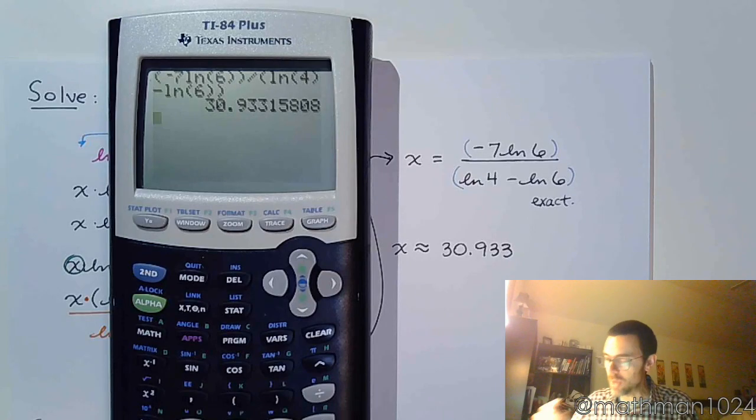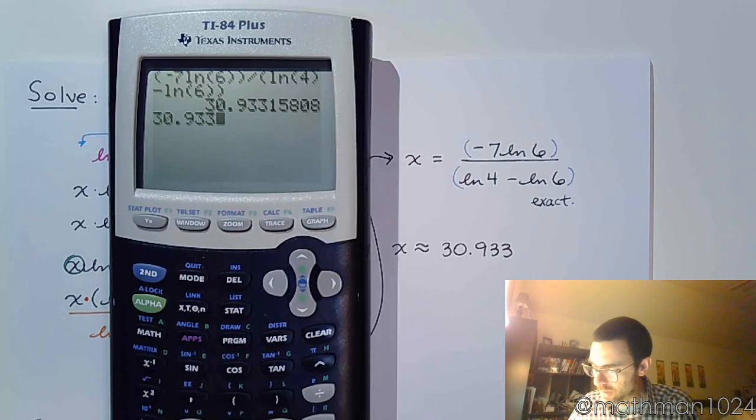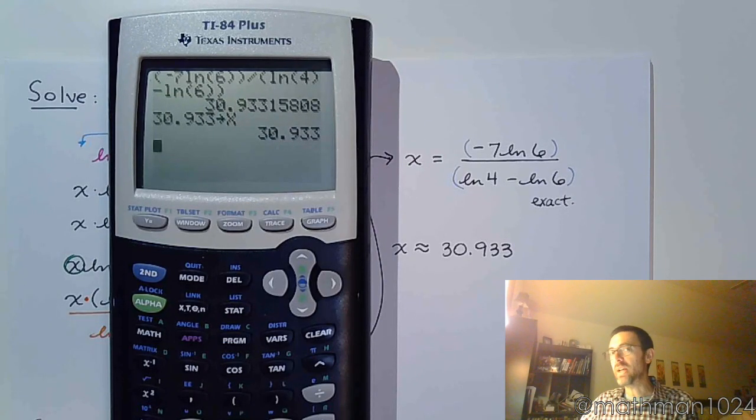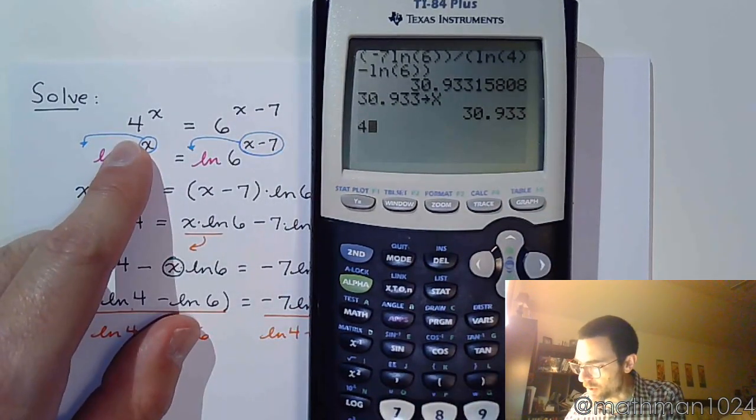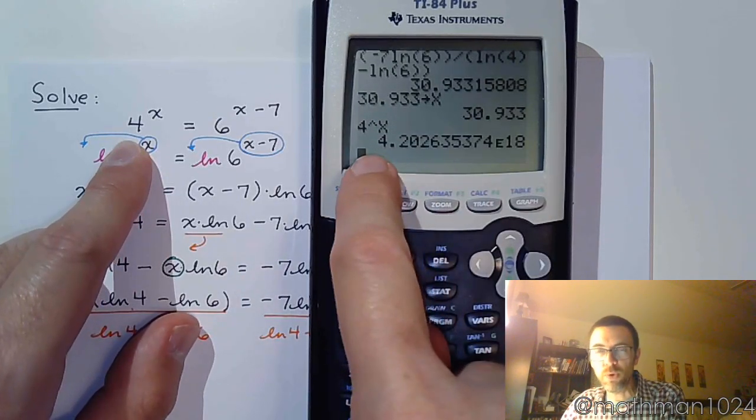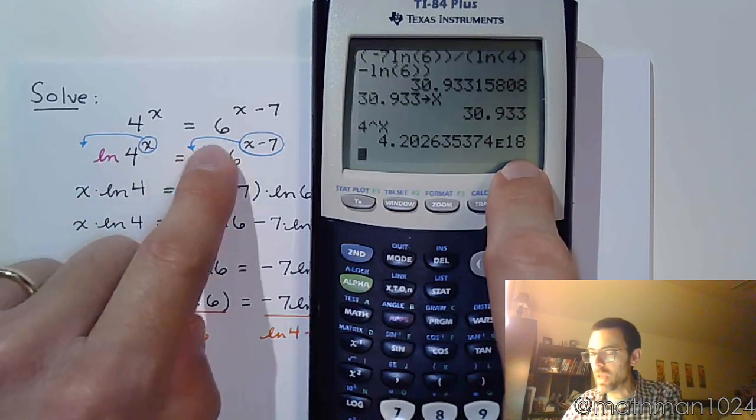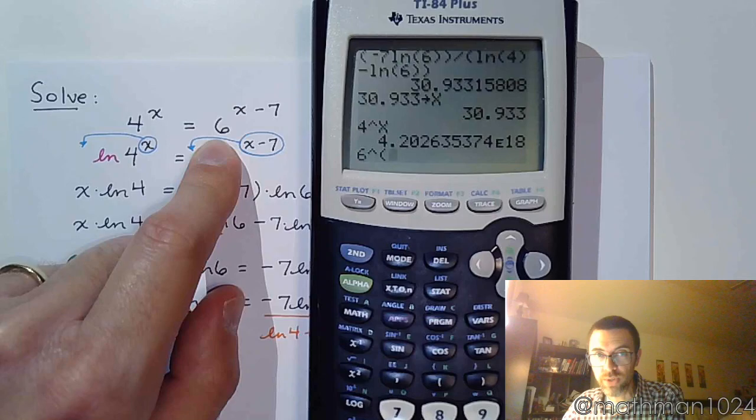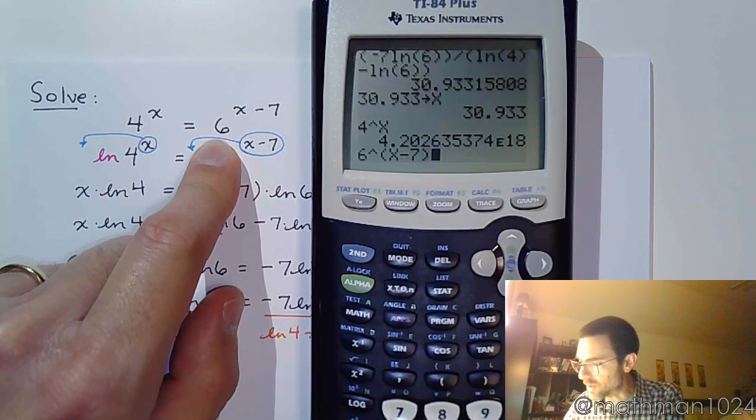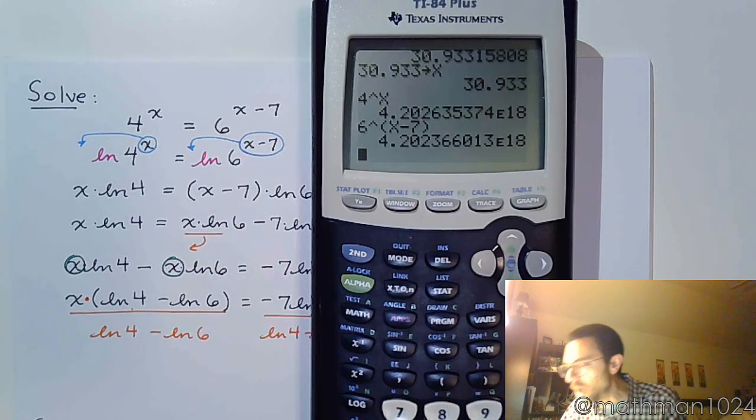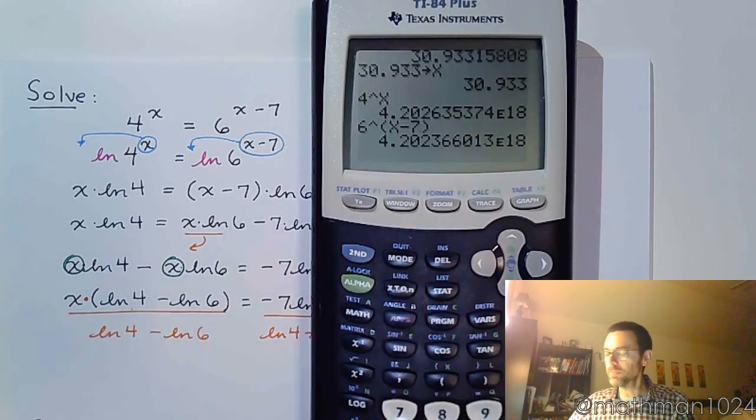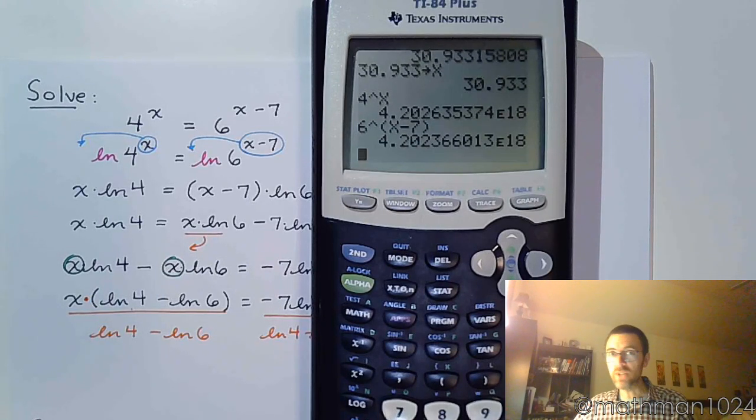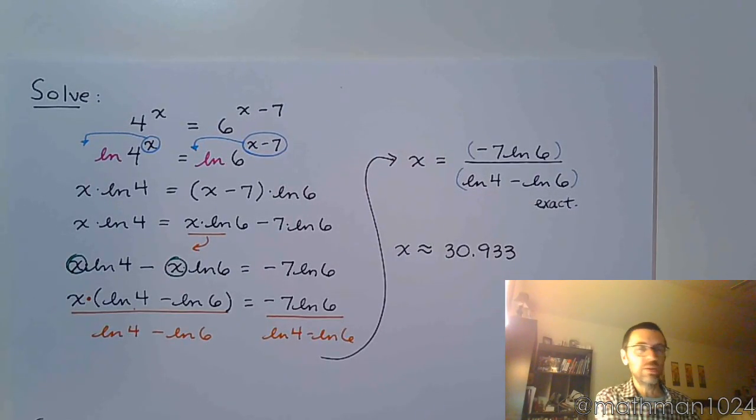So let's see if that works. I'm going to take 30.933, store that into x. And now we're going to see if the left and the right hand sides of the equation end up being the same decimal value. So if I do 4 raised to the x, I get this number, 4.2 times 10 to the 18th. Let's try this: 6 raised to the group, so parentheses, x minus 7. Although I don't get the exact same value, it's really, really close. 4.2 times 10 to the 18th. It's off by a little bit right here. But for the most part, we're good. These guys are the same. So yay! I've got the right answer. The calculator didn't do my work, the calculator checked my work.